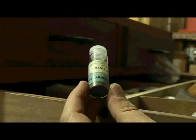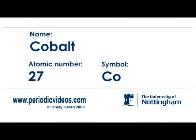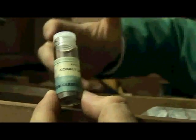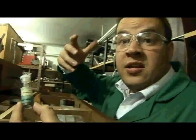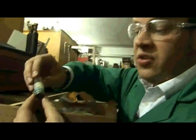Here we have a sample of cobalt. I've got lots and lots of different samples of cobalt in my drawer. This is cobalt sponge. Cobalt is in many ways similar to iron. The cobalt has been generated from a solution and made in very, very finely dispersed form, so it has a very large surface area.